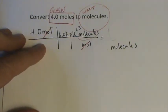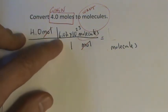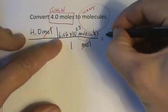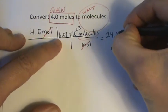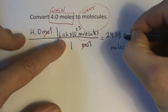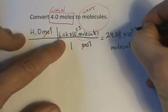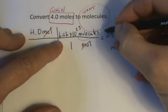You can do it on your calculator, if your calculator is advanced enough to do that. Or you can just take 4 times 6.02, which is 24.08, and then tack 10 to the 23rd on the end. And that's a valid answer.